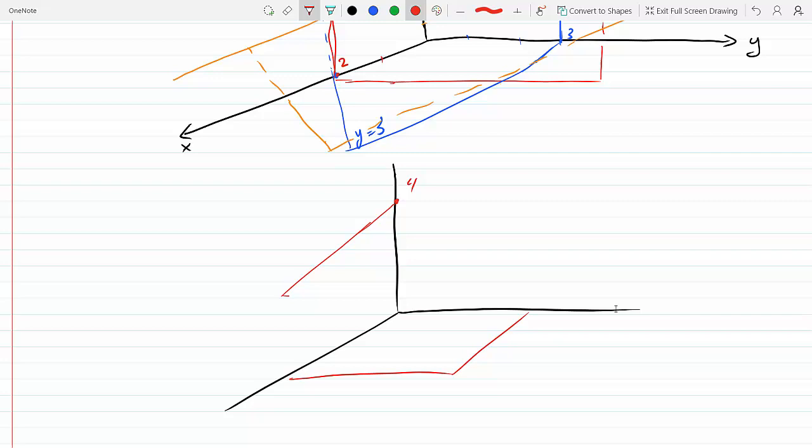This side here would be y equals 3, which is at 3. This side is at 2, x equals 2. This is the x, y, z axes. This is z equals 4, and this is where they meet: the point (2, 3, 4).